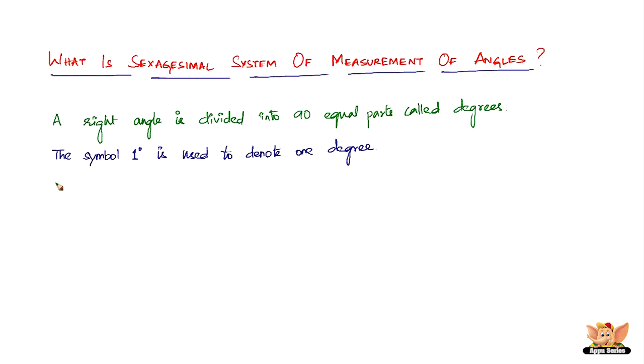The next thing is, each degree is divided into 60 equal parts called minutes. The symbol 1' is used to denote one minute.